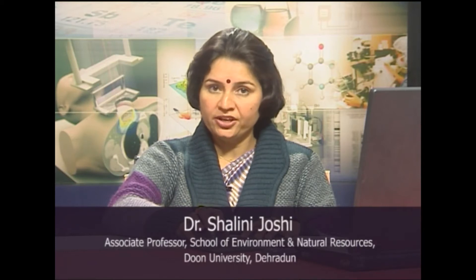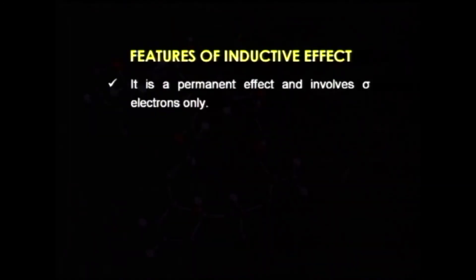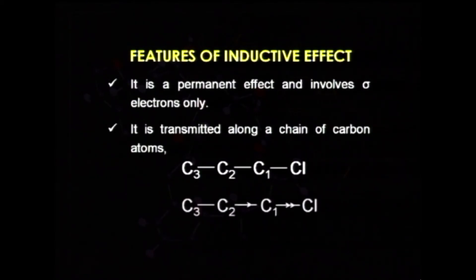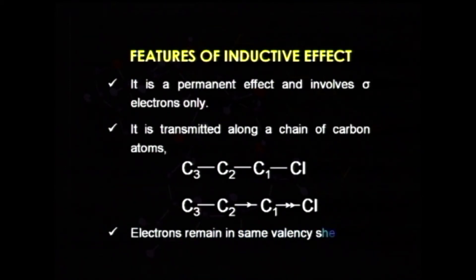It is a permanent effect — mesomeric effect was also a permanent effect, but the electromeric effect is a temporary one. One more difference from mesomeric effect is that the inductive effect involves sigma electrons only. It is transmitted along a chain of carbon atoms, but the electrons remain in the same valency shell; they are only slightly displaced.